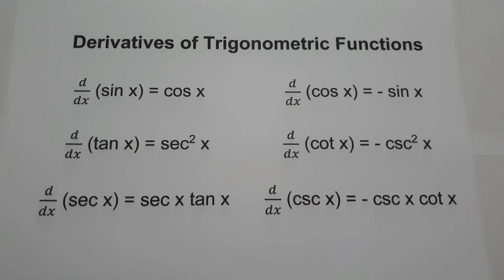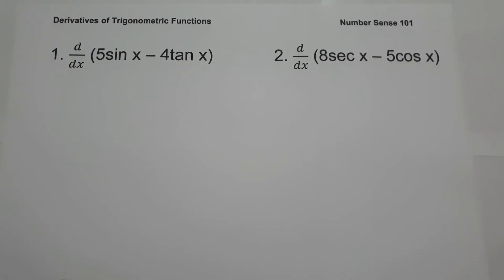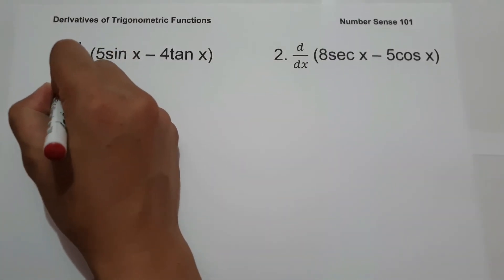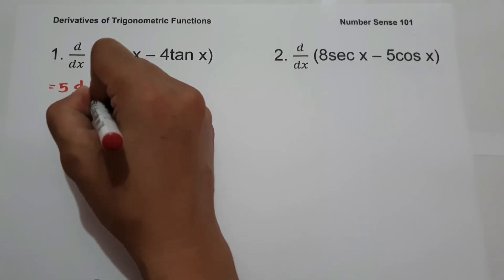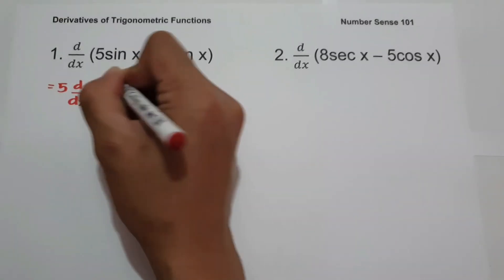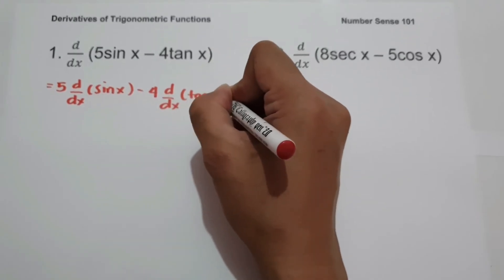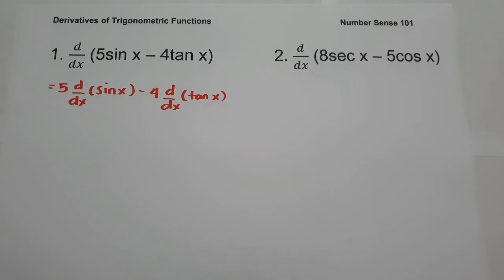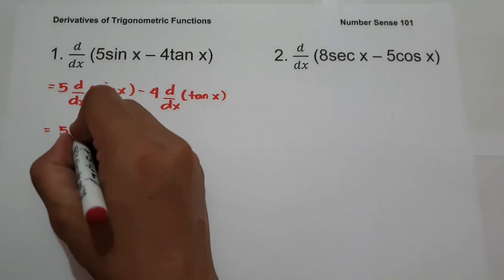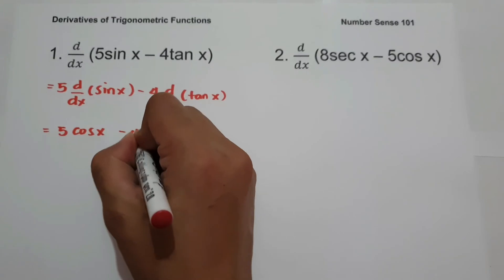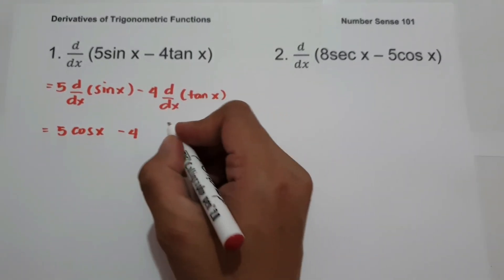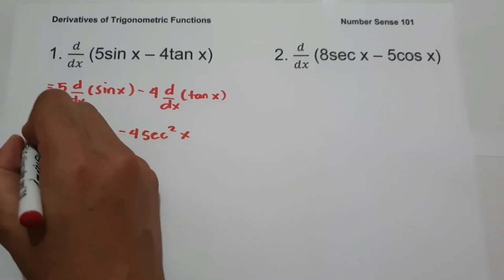So let's start and let's have an example. On the first example, what is the derivative of 5 sine x minus 4 tangent x? We have 5 times the derivative of sine x minus 4 times the derivative of tangent x. The derivative of sine x is cosine x, and the derivative of tangent x is secant squared x. So the answer is 5 cosine x minus 4 secant squared x.